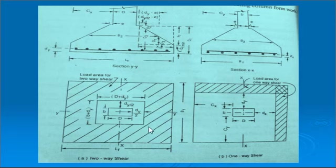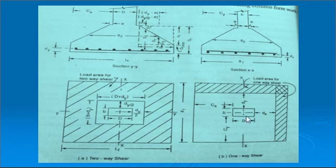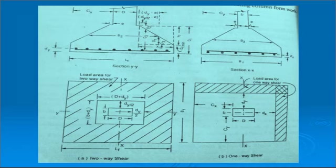The perimeter of the critical section multiplied by the effective depth dy gives the area resisting two-way shear. Similarly, one-way shear is considered at distance dx from the face about the x-axis and at distance dy about the y-axis, giving two critical sections for one-way shear in each direction.